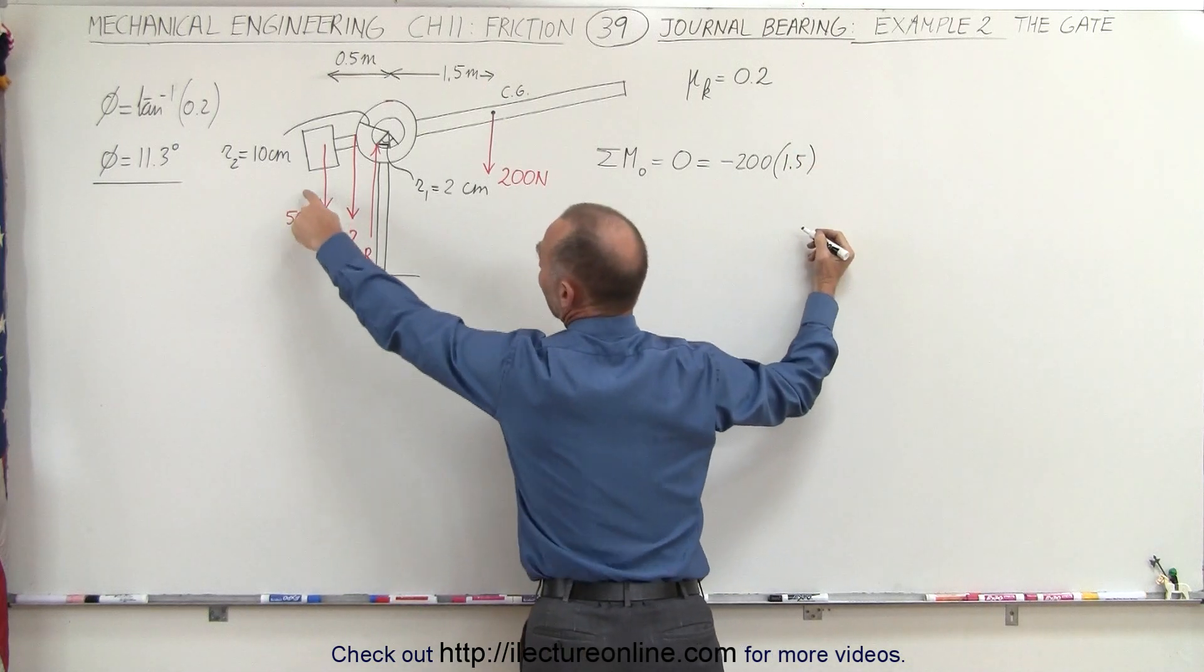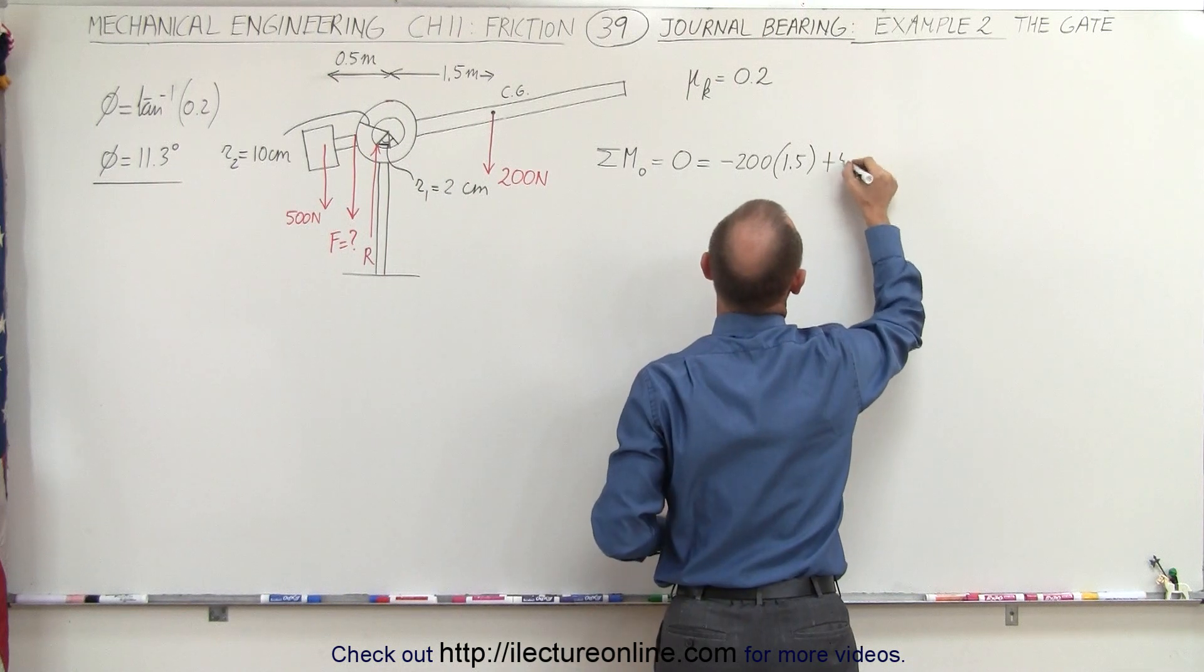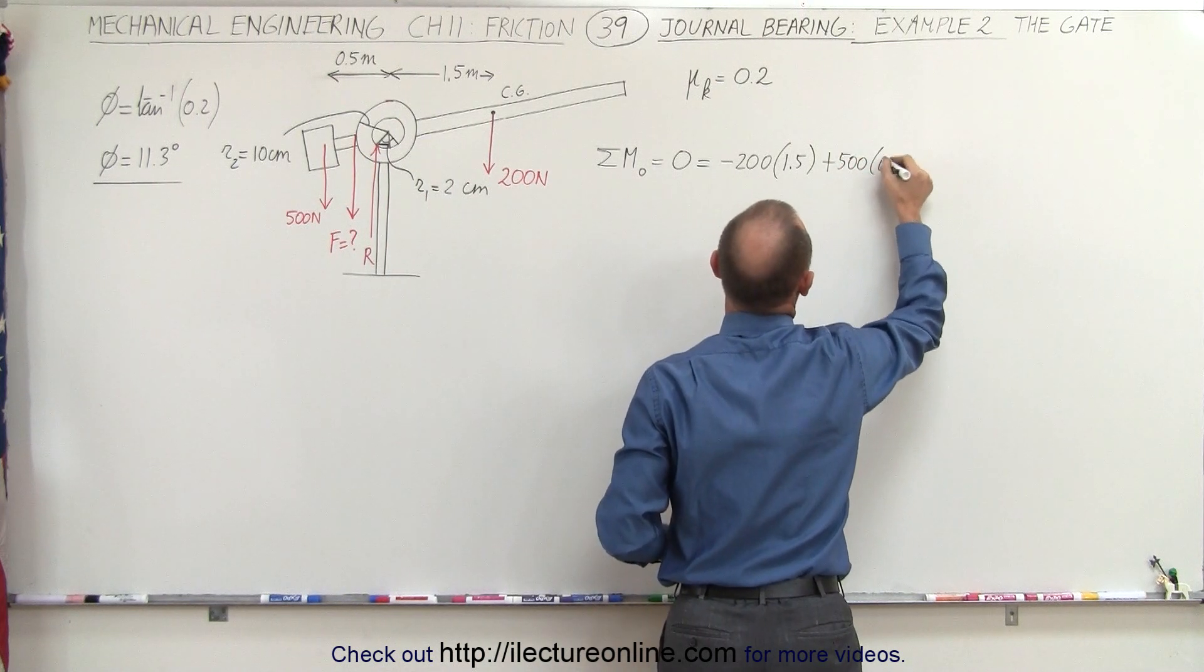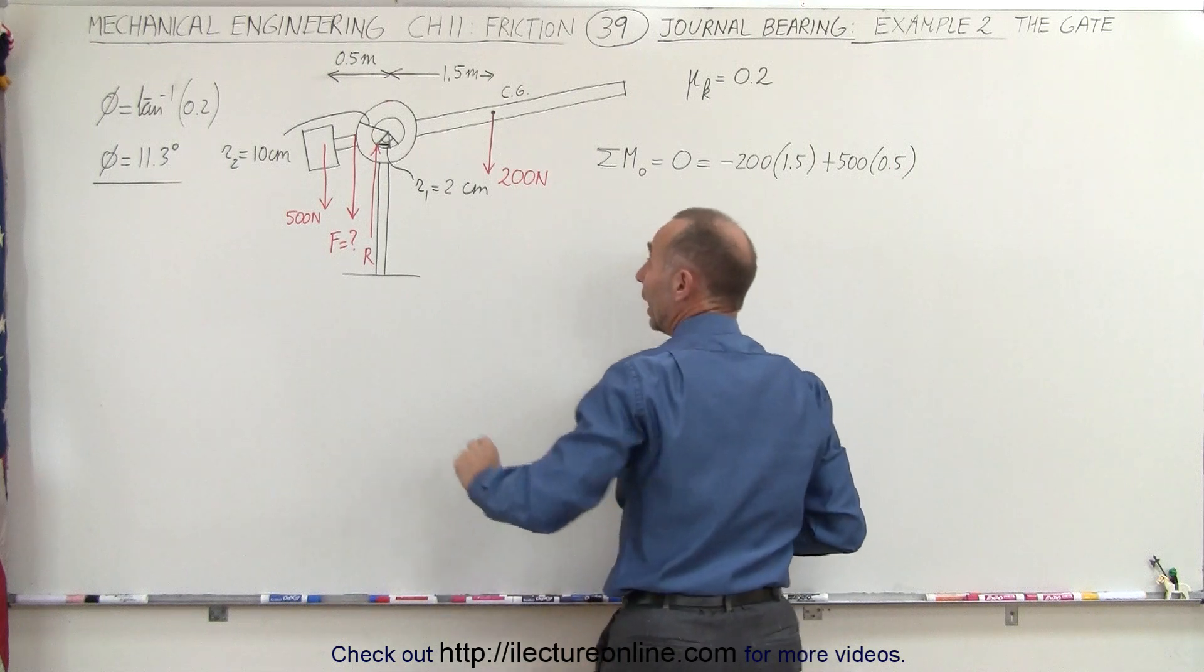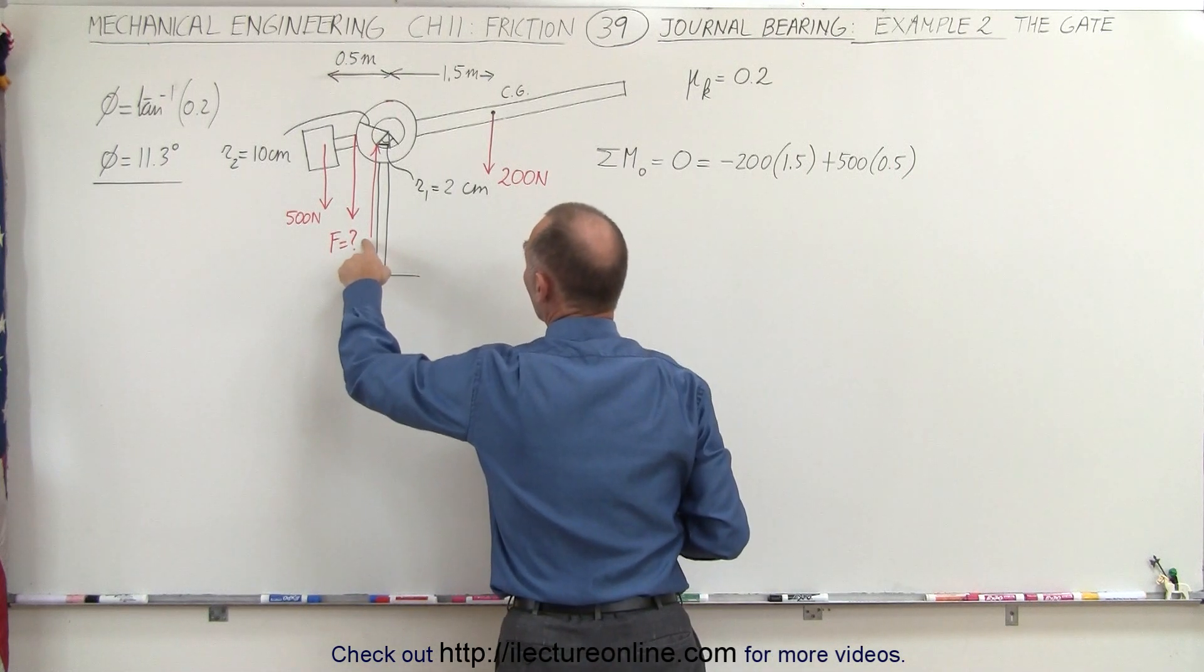And now we have the 500 N force causing the counterclockwise moment, so it's plus 500 times 0.5. And what else do we have? We have the reaction force.